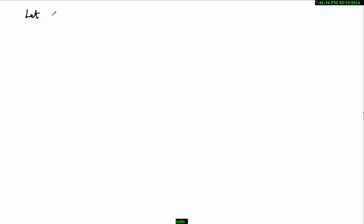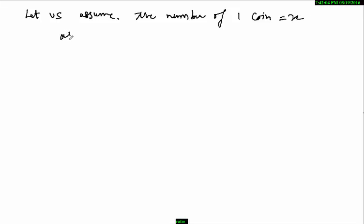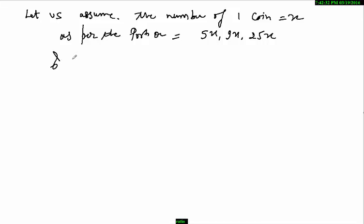First, let us assume the number of 1 rupee coins is 5x. As per the ratio, the 50 paise coins would be 9x and the 25 paise coins would be 25x. Adding all their values should give 1008 rupees.